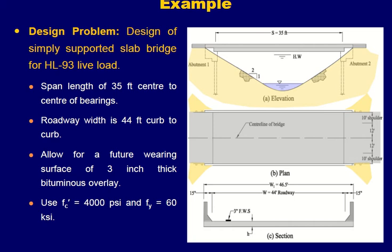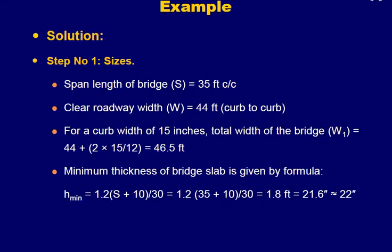From the figure you can see the data provided: the span of the bridge is 35 feet shown in the top view, along with the center line of the bridge road and the width. There are 12-feet wide lanes with 10-feet shoulders on either side for a total width of 44 feet. The sectional detail shows the slab thickness to be designed and the future wearing course of 3 inches. Including the 15-inch barriers on either side, the total width comes out to be 46.5 feet.